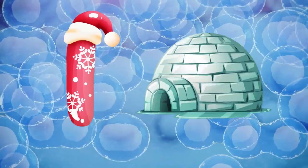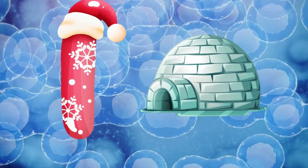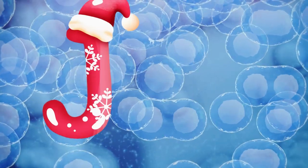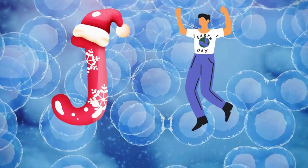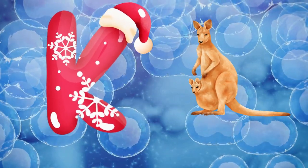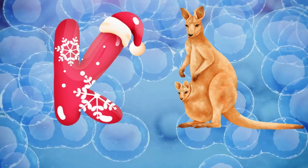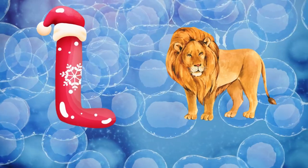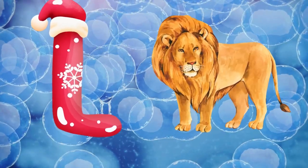I is for igloo, i-i-igloo. J is for jump, j-j-jump. K is for kangaroo, k-k-kangaroo. L is for lion, l-l-lion.